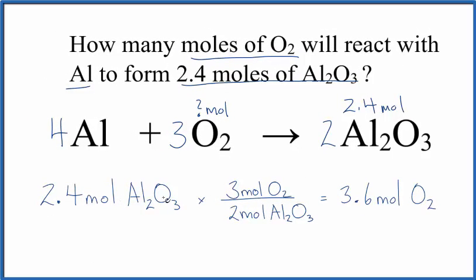We start with our 2.4 moles of aluminum oxide. And you can consider this to be over 1. That's kind of helpful. And this is our mole ratio. 3 moles of oxygen to 2 moles of aluminum oxide. That comes from these coefficients here. And really that's the only time you use the coefficients from the balanced equation in this process.